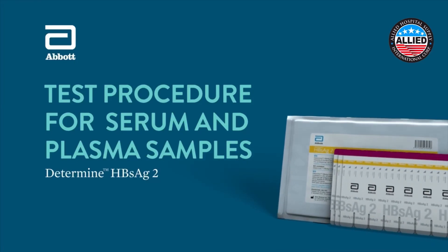The Determine HBsAg2 Test Procedure Training for Serum and Plasma Samples. The Determine HBsAg2 test is a visually read qualitative immunoassay for the detection of hepatitis B surface antigen, or HBsAg, in human serum, plasma, or whole blood.